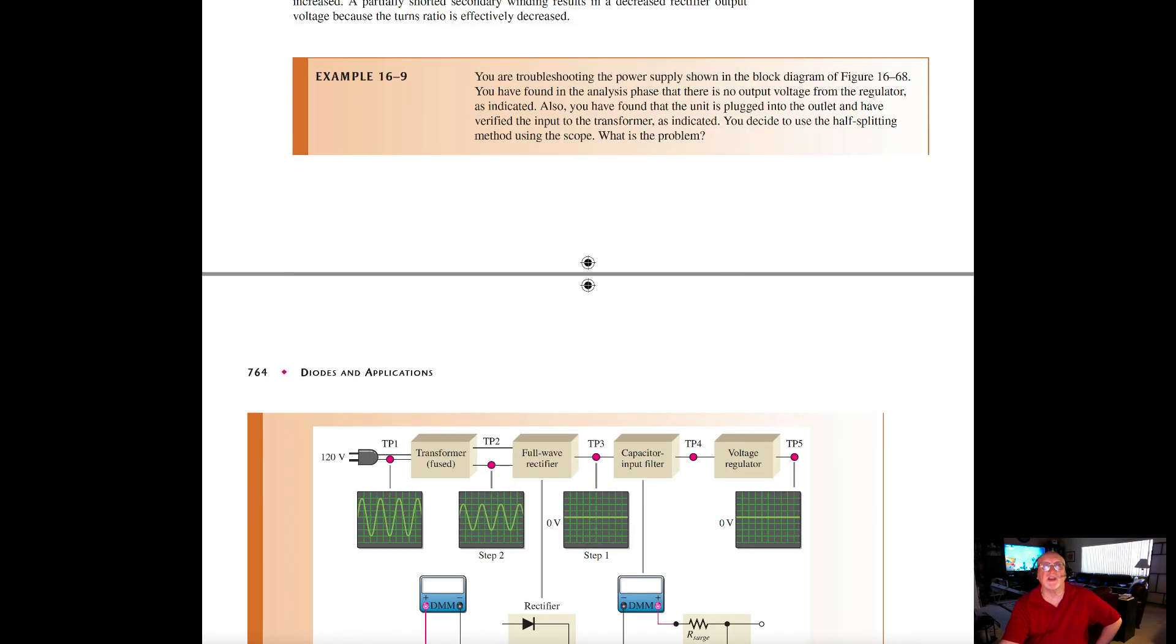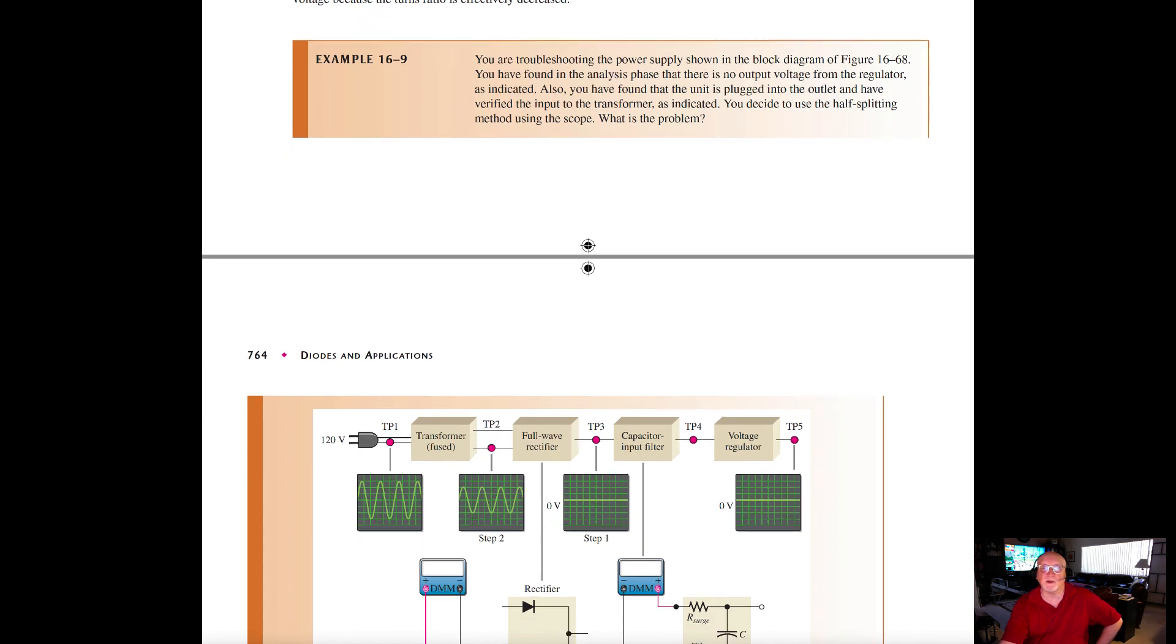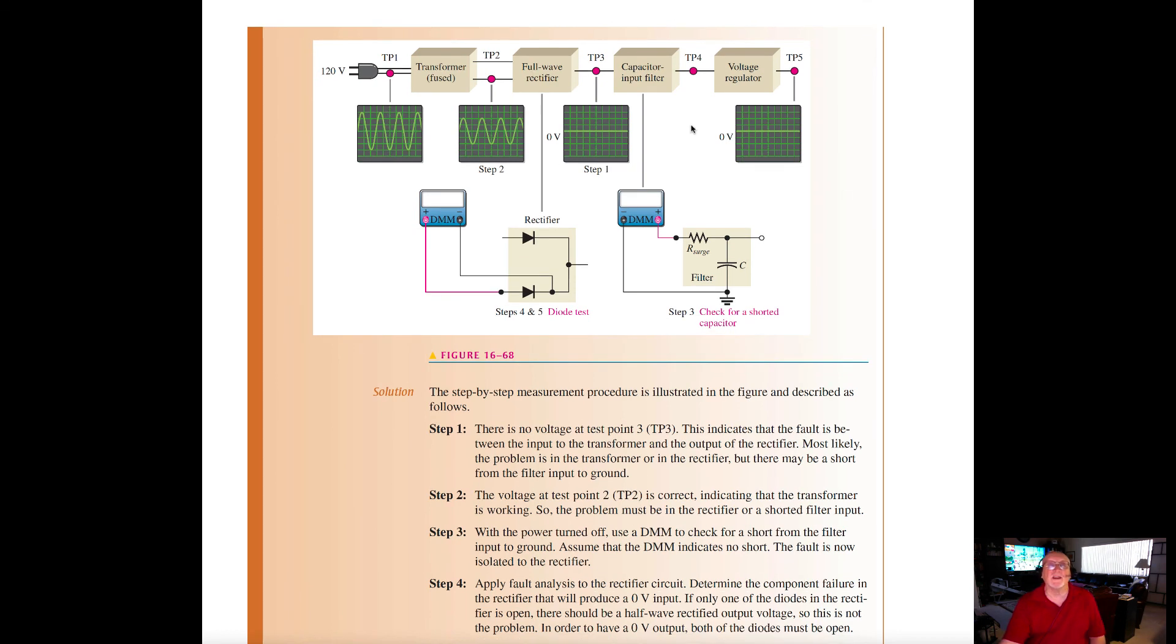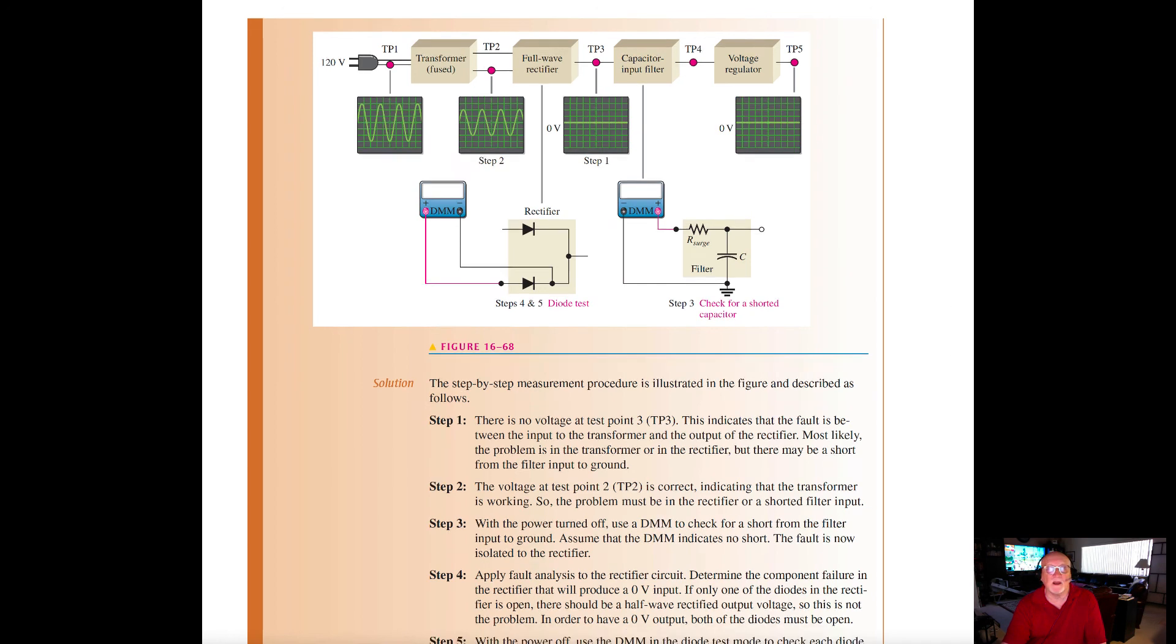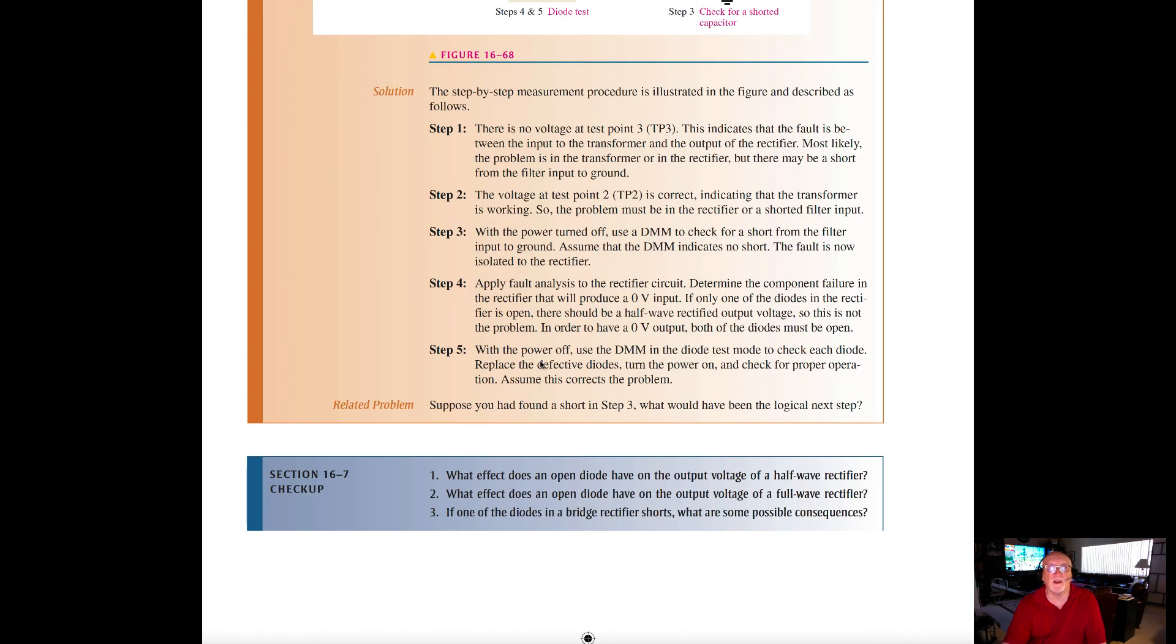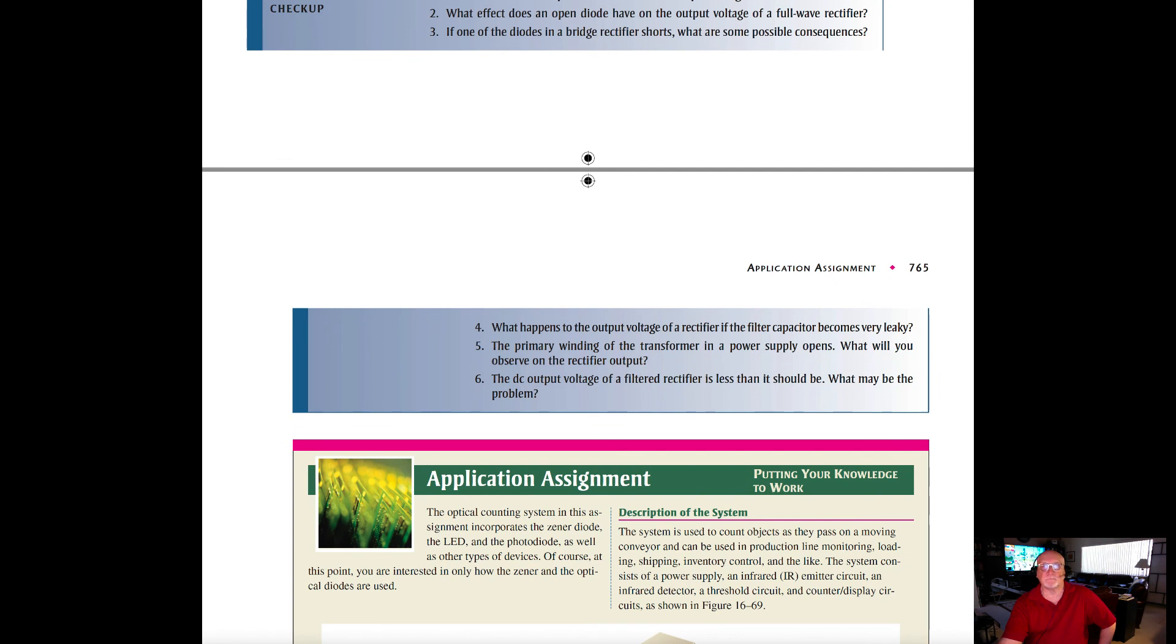Take a look at this example here of troubleshooting a power supply. You found that in the analysis phase that there's no output voltage from the regulator. Also, you found that the unit is plugged into an outlet and have verified the input to the transformer. You decide that using the half splitting method, using the scope is the best way to proceed through this. Take a look at this and go through what each step is showing here, test point one, two, three, four, and five. Follow the steps here, one through five, in determining what you think the possible malfunction could be.